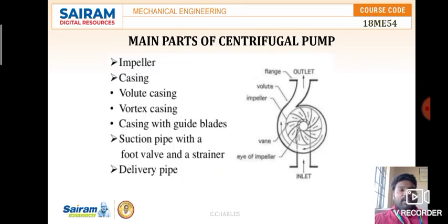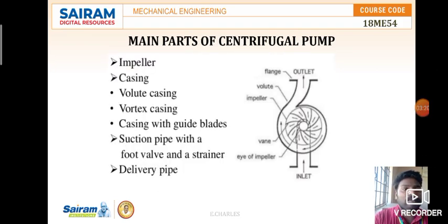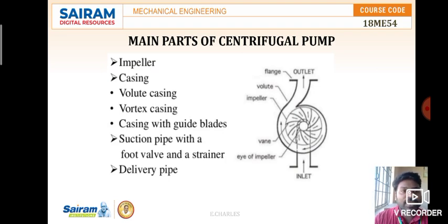Moving on to the main parts of the centrifugal pump — looking at the diagram on screen, we can see the eye of the impeller with vanes attached to it. There is an inlet pipe through which water enters and flows to the impellers, hitting the vanes. The pump has a volute casing through which water flows out through the outlet pipe. This is the construction of an actual centrifugal pump.